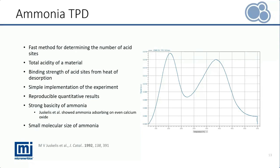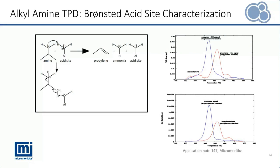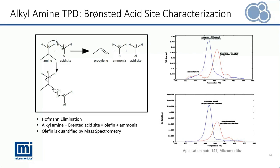On the right, here is a good example of an ammonia TPD at 10 degrees Celsius per minute ramp, analyzed on the AutoChem 3. We can immediately see the two different acid sites present, and the ammonia desorbed can be integrated by calibrating the TCD signal, which gives insights to the acidity of each acid site. On the other hand, we can use alkyl amines as probe molecules in contrast to ammonia. They are protonated by the Bronsted acid sites and decomposed by Hoffman elimination into ammonia and olefin. The olefin mass spec signal can be calibrated and quantified, hence the Bronsted acid site can be quantified.